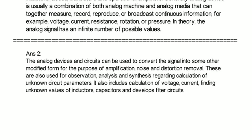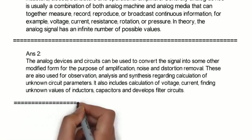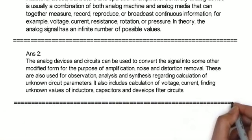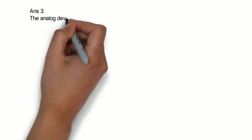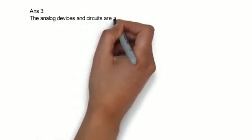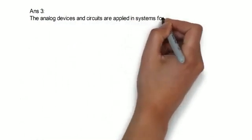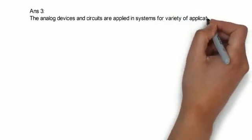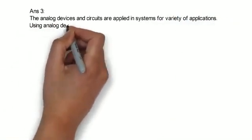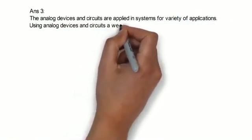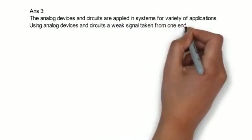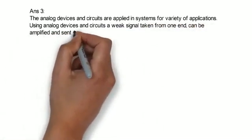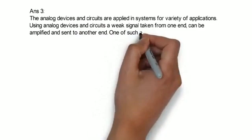Now we will study third question, how is it applied in systems? The analog devices and circuits are applied in systems for variety of applications. Using analog devices and circuits, a weak signal taken from one end can be amplified and sent to another end. One of such analog system is shown below.